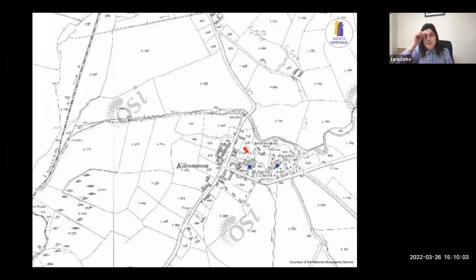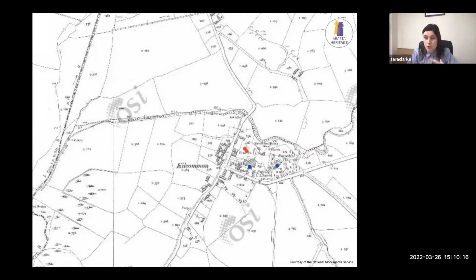Once we've done that research, we start looking at the Ordnance Survey maps. This helps us figure out if the landscape has changed much from the time of the attack to modern times. When it comes to cities things change quickly, but in the countryside things often stay the same, which is useful for this kind of work. We looked at the roads to make sure they are similar to what they were in the past, and we looked at field boundaries to see if they've changed, and if they had we marked it in.